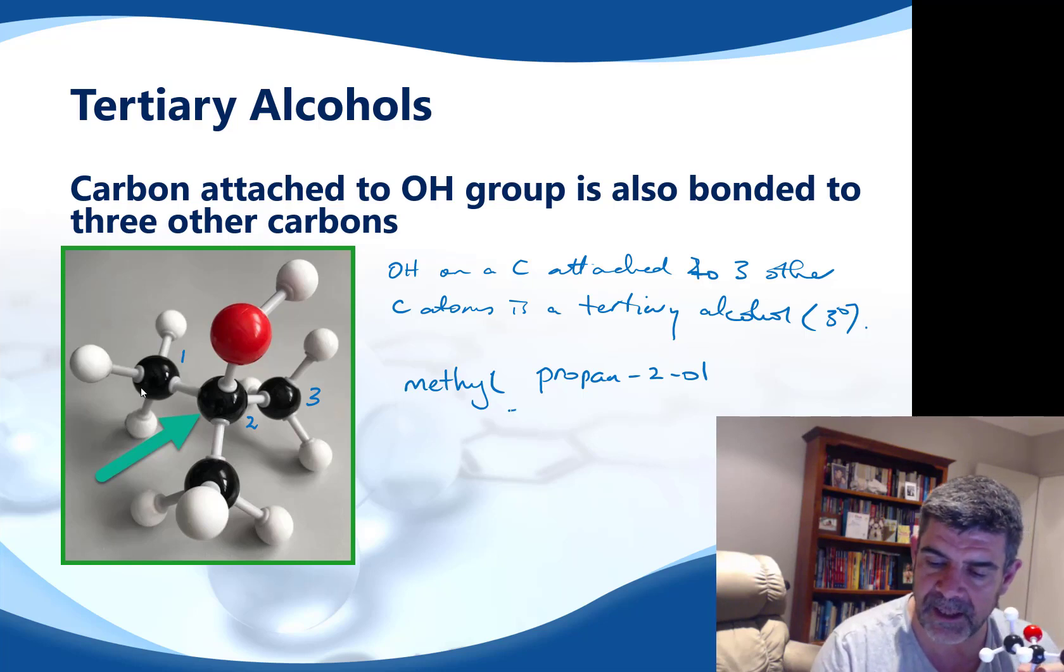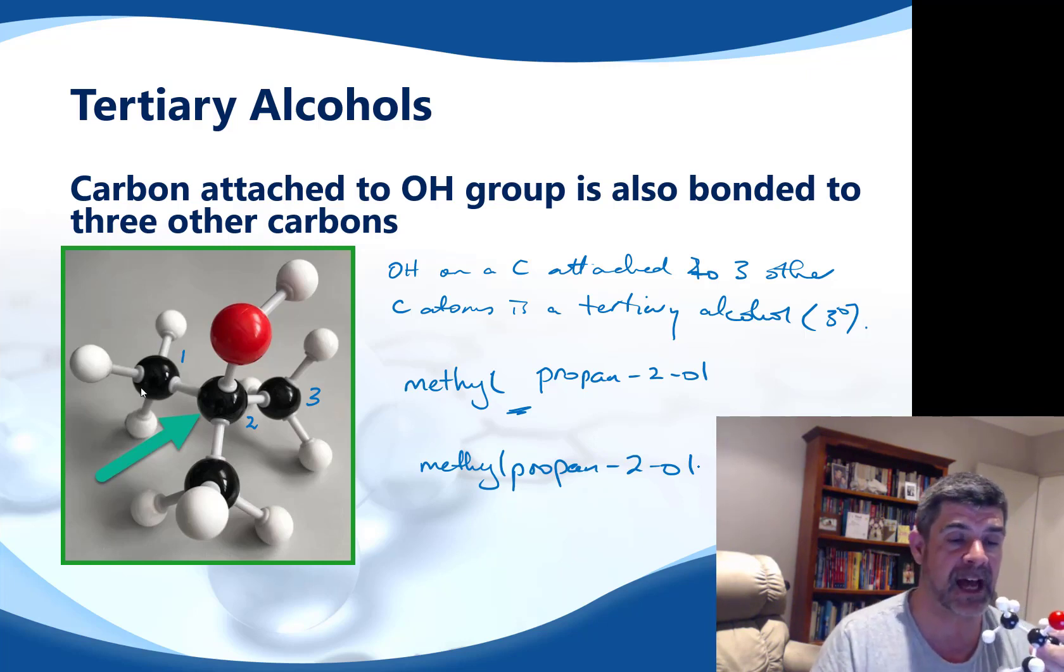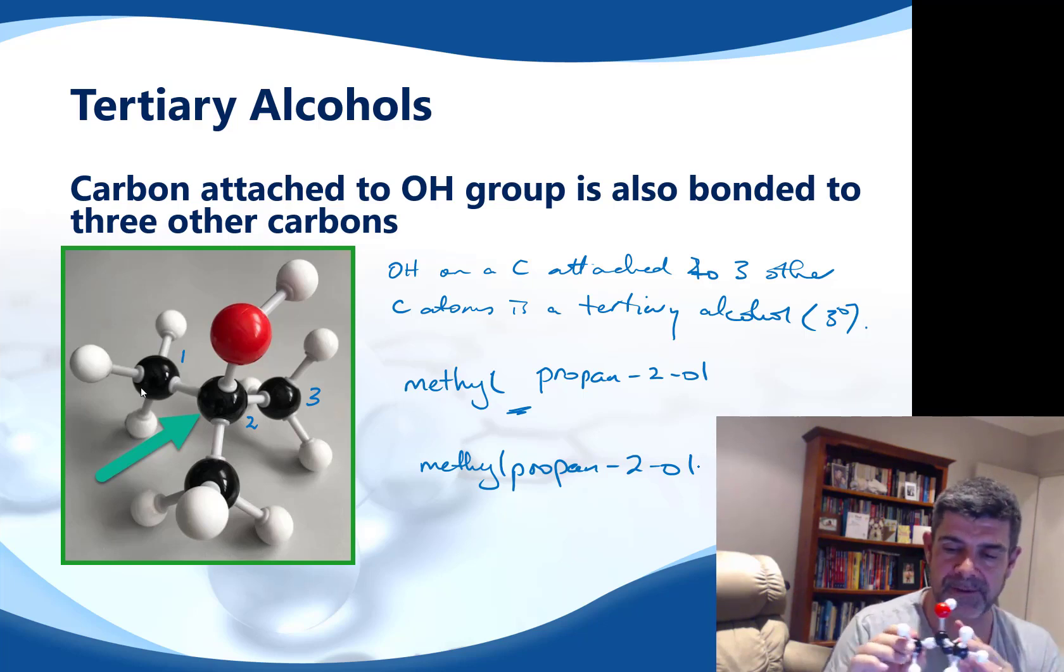Now you can see the way that I've written it's a little bit messy. What we want you to try and do is put this whole name together so that the whole thing is a single name. So this tertiary alcohol would be called methylpropan-2-ol. And what we have is a carbon attached to the OH groups, which is also attached to three other carbons.